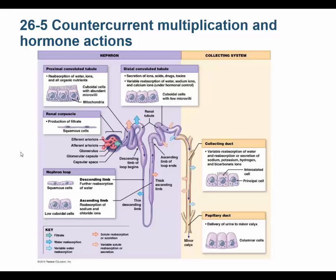Aldosterone and ADH act on the distal convoluted tubule and the collecting duct. Everything reabsorbed in the proximal convoluted tubule and loop of Henle is obligatory reabsorption, but everything reabsorbed in the distal convoluted tubule and collecting duct is facultative — variable — and controlled by hormones: aldosterone and ADH.